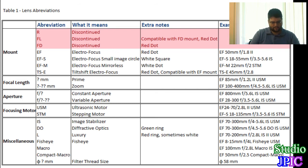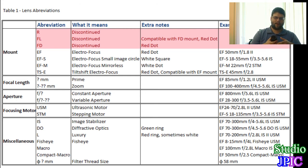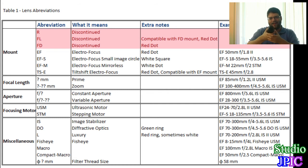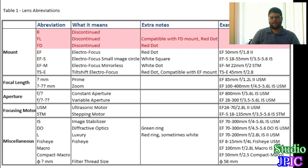Finally, the miscellaneous section. First is the IS, or image stabilizer — this kit lens does come with it. Basically there's a motor that controls a lens element and tries to compensate for any vibration. So if you're holding the camera and there's movement, the motor tries to keep your image steady. It works great for both video and photography.